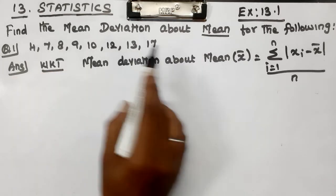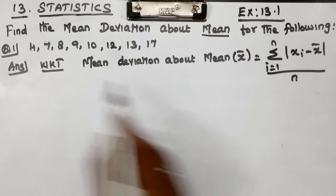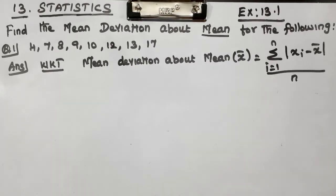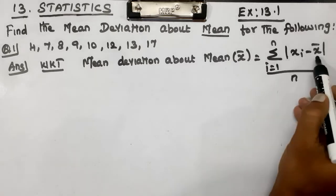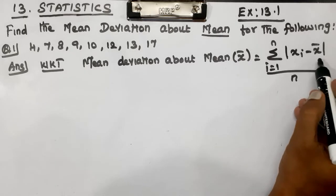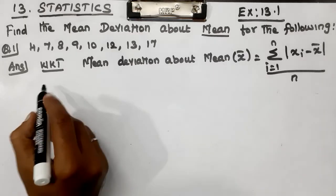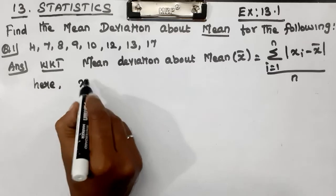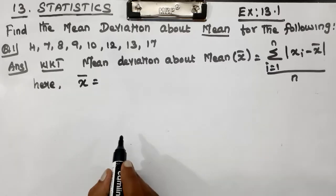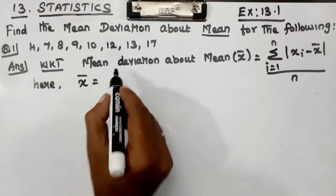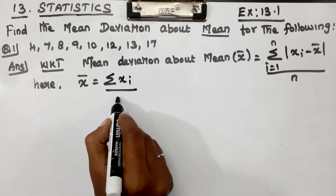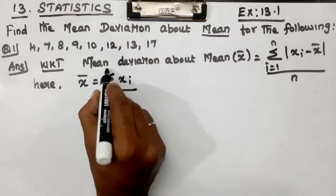We have x1, x2, x3, x4, x5, x6, x7, x8 — so i equals 1 to 8, meaning 8 terms. To find x_i minus x_bar, we first need x_bar. The formula for x_bar is summation of x_i divided by n, where i equals 1 to n.